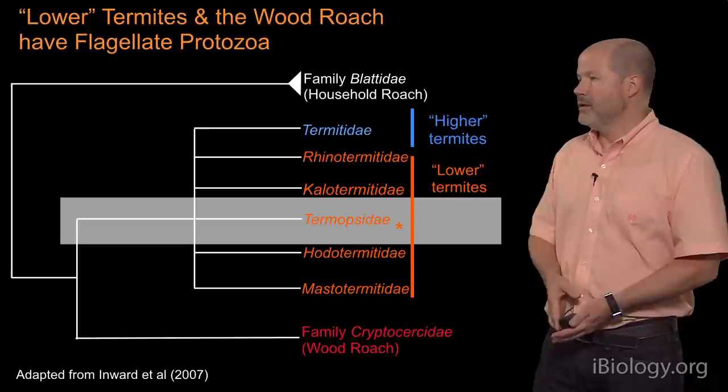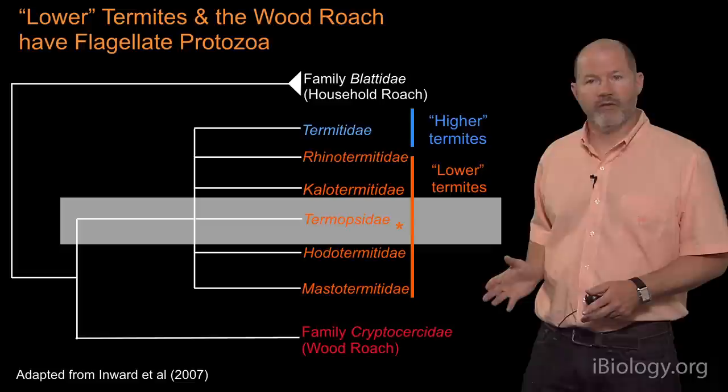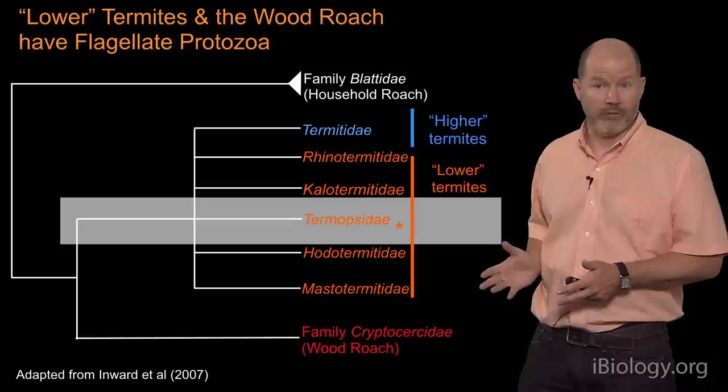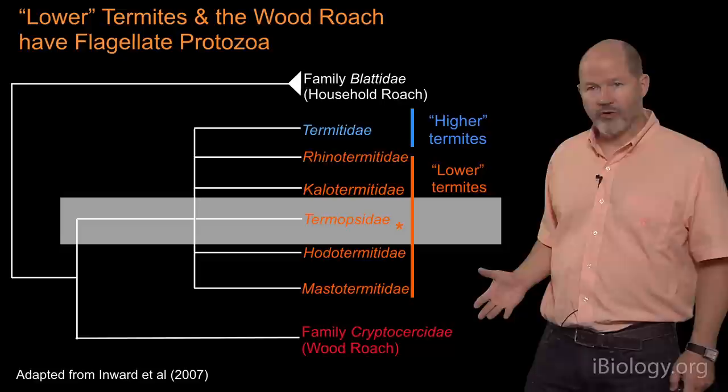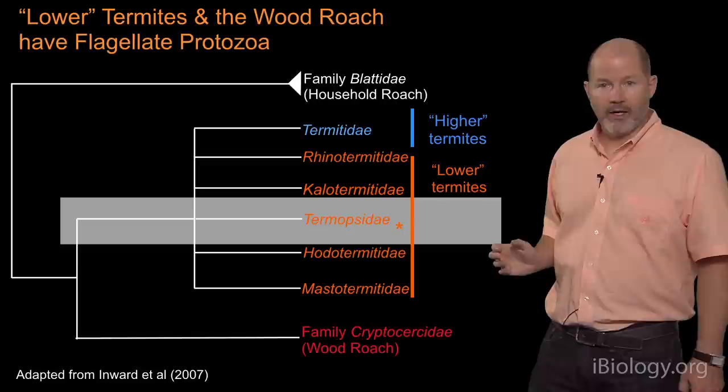Before I tell you more about termite gut microbes, let me tell you a little more about termites. There are about 3,000 species of termite on Earth. Termites are related to cockroaches and mantids, and although insects, are quite distantly related to ants, wasps, and bees, which are also social. This is an example of where sociality in insects has arisen in two very different groups.